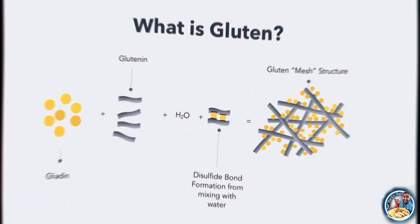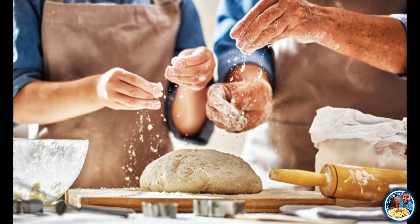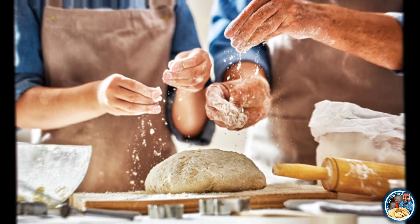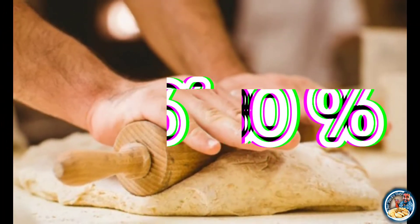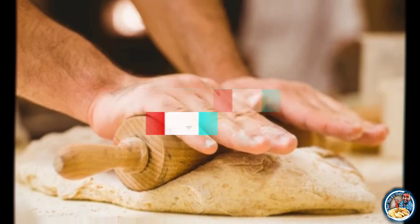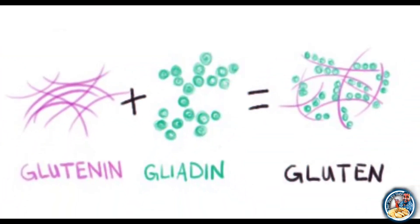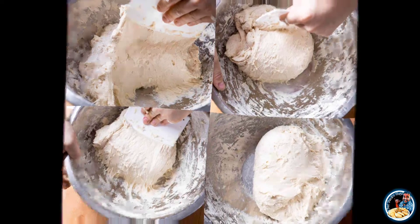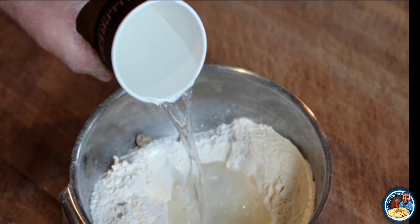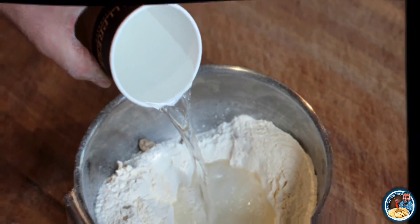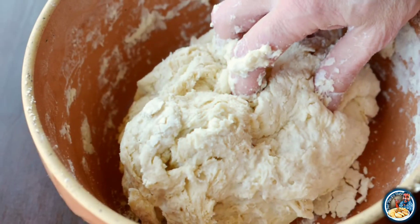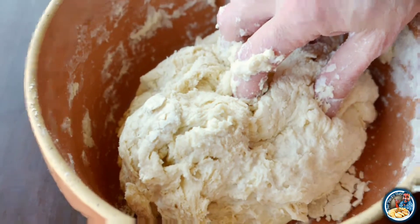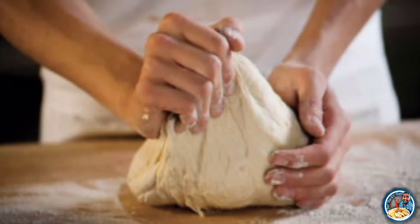This protein is a protein — gluten and gliadin. If you look at gluten and gliadin, you should extract the dough. This is a protein.